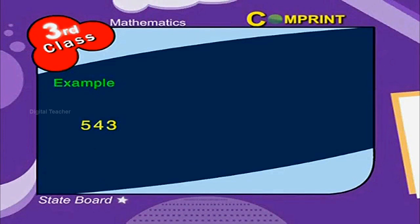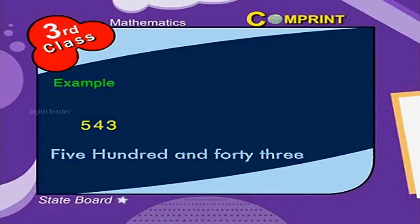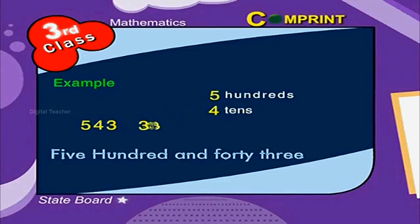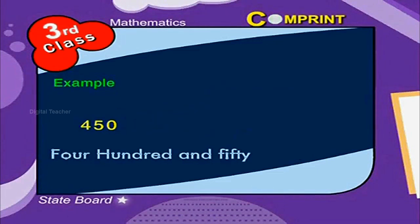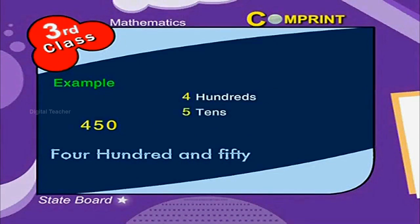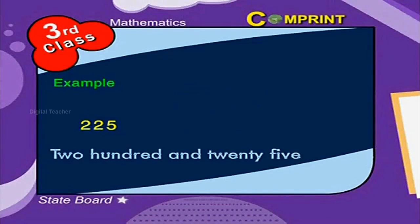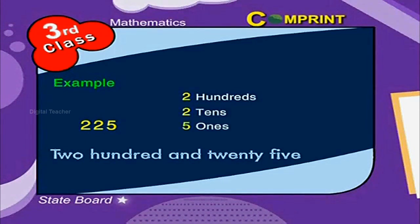In the number 543, we find 5 hundreds, 4 tens, and 3 ones. In the number 450, 4 hundreds, 5 tens, and 0 ones. In the number 225, 2 hundreds, 2 tens, and 5 ones.